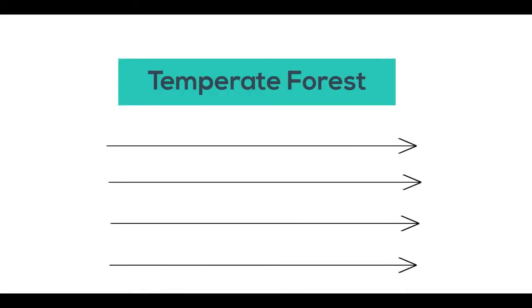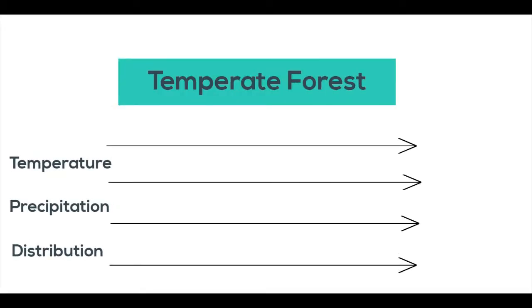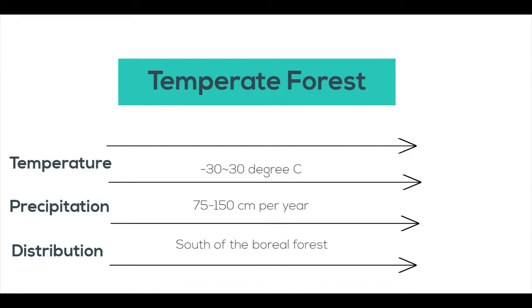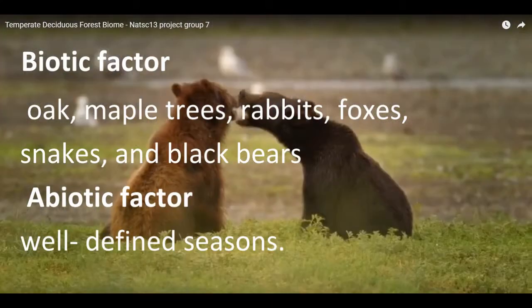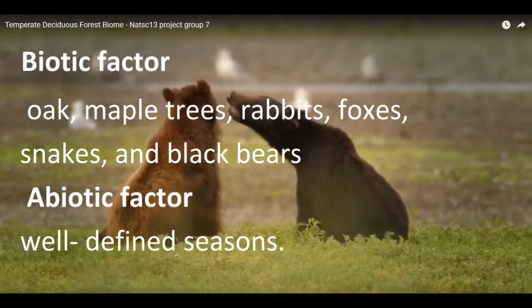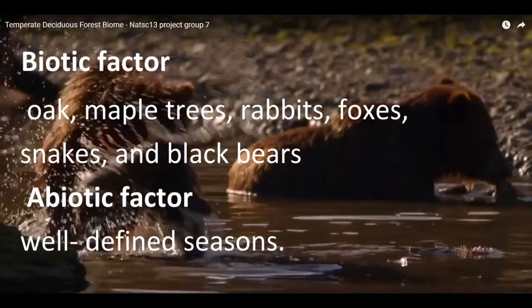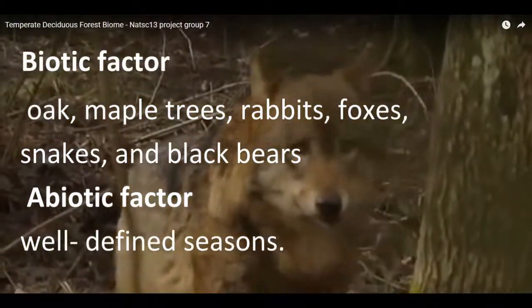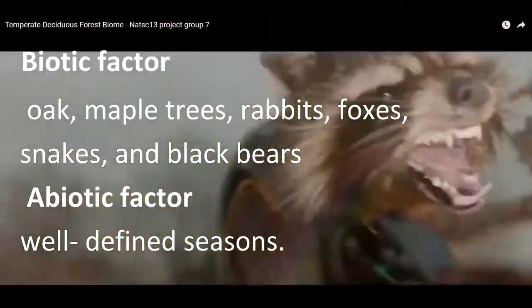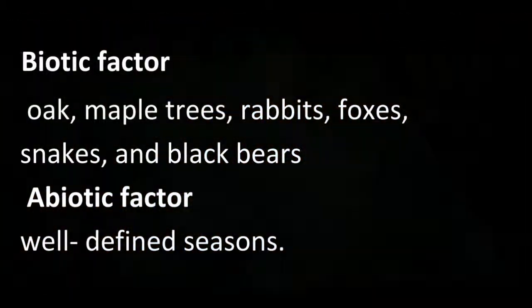The temperate forest is composed of broad-leaved, deciduous trees. Its temperature ranges from minus 30 to 30 degrees Celsius. Its biotic factor includes oak, maple trees, rabbits, foxes, snakes, and black bears. Its abiotic factor includes well-defined seasons.